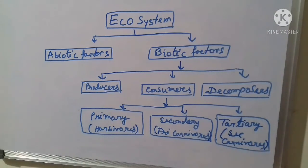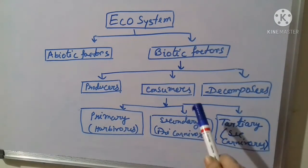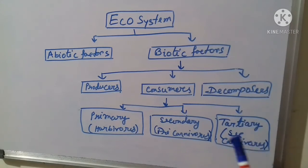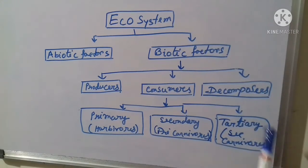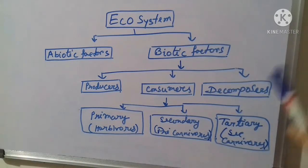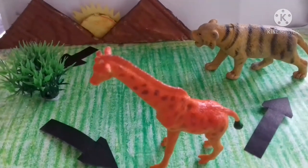Secondary consumers or primary carnivores use primary consumers or herbivores as their food. Secondary carnivores use primary carnivores as their food. After all these organisms die, their bodies will rot and the decomposers — algae, fungi and bacteria — will decompose their bodies. This is a model of the food chain.